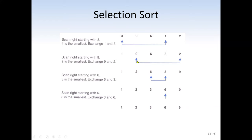We go through the list again — the smallest item we find is 2. We swap 2 with 9 because 9 is in the second position. Then we go through the list again and see 6, 3, 9 — three is the smallest, so we swap it with 6 for the third position. At this stage, 1, 2, 3 are sorted. The remaining two items are 6 and 9, both already in the right position, so we leave them.